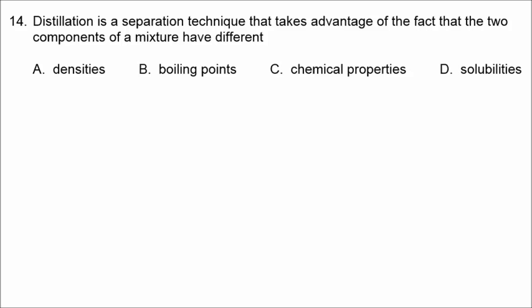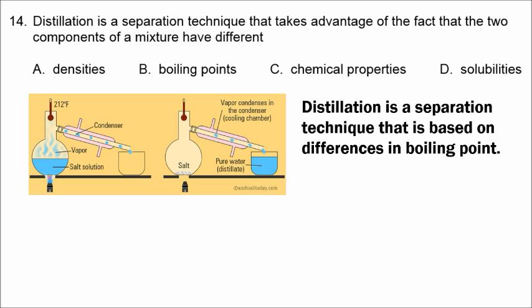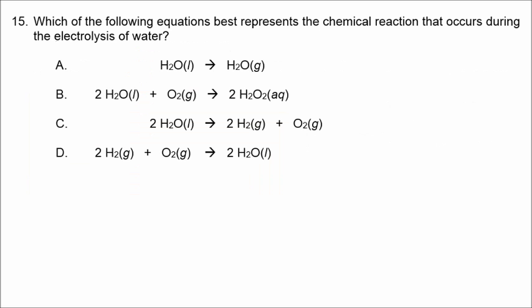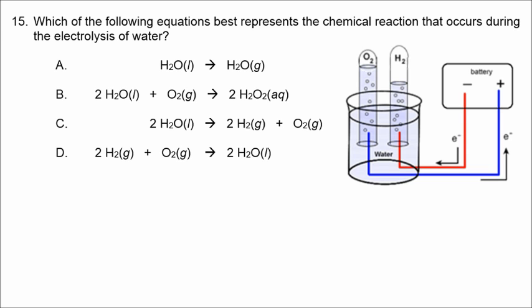Number fourteen is about distillation. Distillation is a separation technique based on differences in boiling point, whether for salt and water or alcohol and water — different boiling points are separated by heating and cooling in the condensing chamber. Number fifteen: the electrolysis of water starts with liquid water and produces both hydrogen gas and oxygen gas, so the correct answer is C.